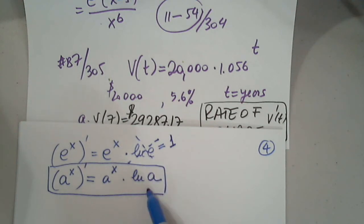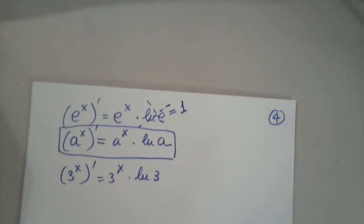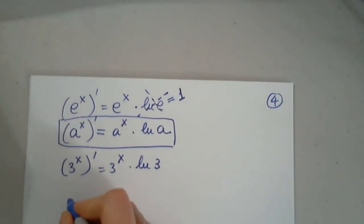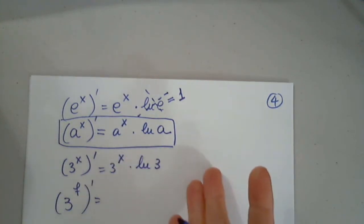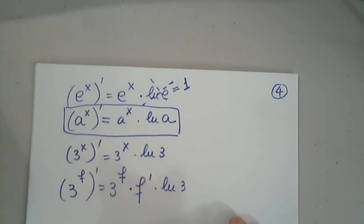Like, for example, 3^x - if I want to differentiate, this will be 3^x multiplied by natural log 3. Now, of course, if I have a slightly more complicated situation in which I have 3 raised to a function prime, exactly the same: it's still 3^f times natural log 3, but I have to multiply by the function prime.